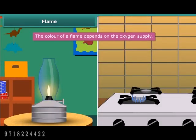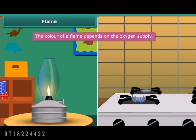When we look at a flame of a kerosene lamp, it is yellow in color, but the flame of a kitchen stove is blue. The color of a flame depends on the oxygen supply. If the oxygen supply is less, the flame will appear yellow due to incomplete combustion of fuel. And if it is more, the flame will appear blue due to complete combustion of fuel.